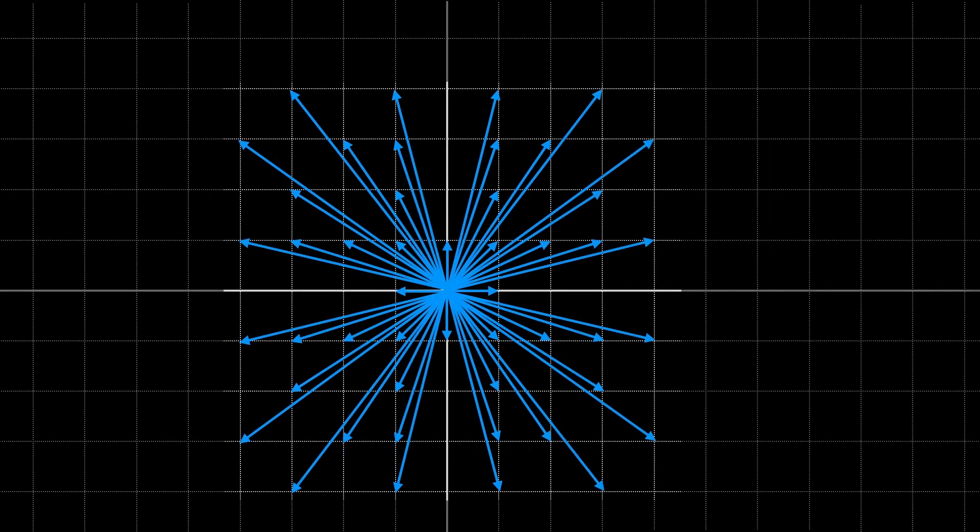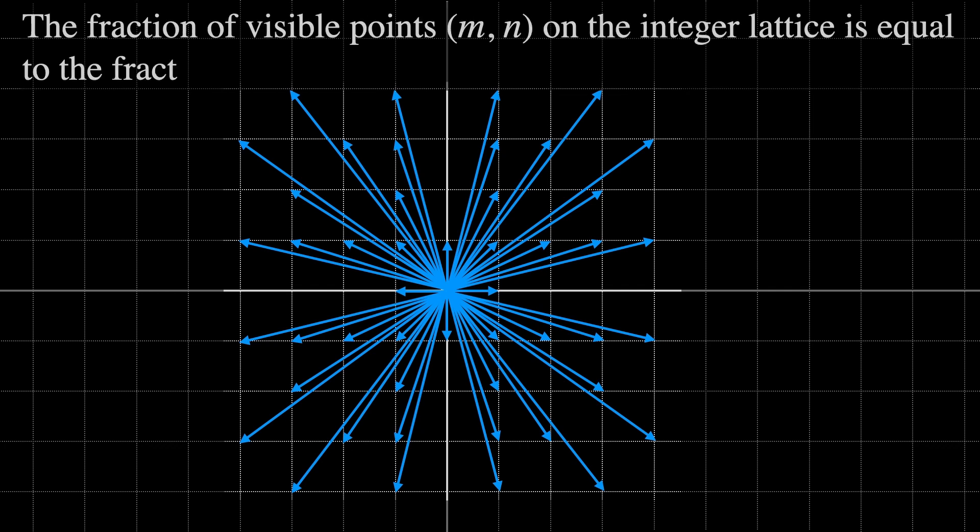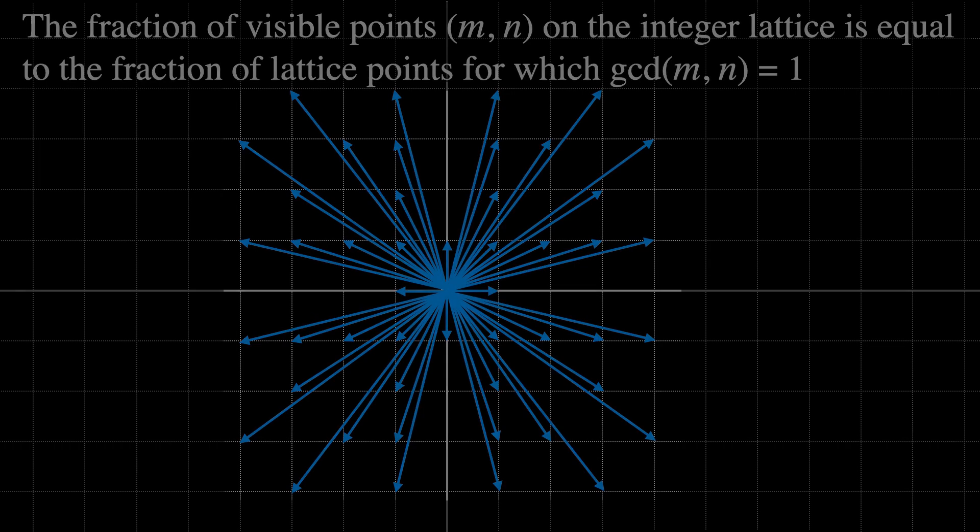The fraction of visible points MN on the integer lattice is equal to the fraction of lattice points for which the greatest common divisor of M and N is equal to 1. So, the question I want to answer is what is the probability that a given point on the integer lattice is made up of two co-prime coordinates. I'll provide an intuitive argument but I'll leave links in the description to more rigorous proofs for those interested.